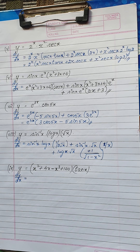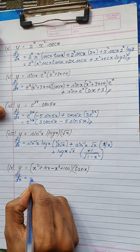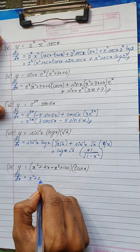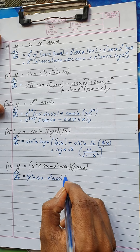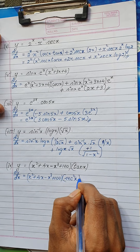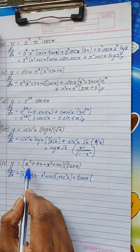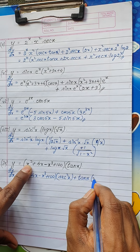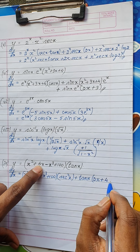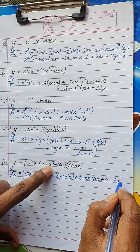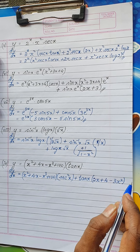Next: y = (x²+4x−x³+100)·tan x — a product of two functions. Keep (x²+4x−x³+100) as it is and differentiate tan x, giving sec²x. Plus keep tan x as it is and differentiate (x²+4x−x³+100): derivative of x² is 2x, derivative of 4x is 4, derivative of x³ is 3x², and derivative of constant 100 is 0. That's the solution.